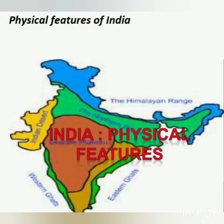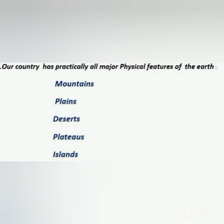You have already learnt earlier that India is a vast country with varied landforms. What kind of terrain do you live in? If you live in the plains, you are familiar with the vast stretches of plain. In contrast, if you live in a hilly region, the rugged terrain with mountains and valleys are common features. In fact, our country has practically all major physical features of the earth — that is, mountains, plains, deserts, plateaus, and islands.